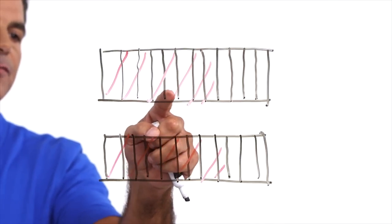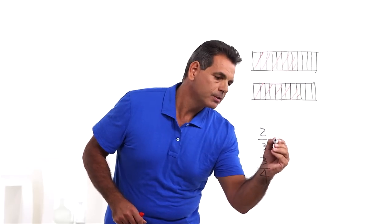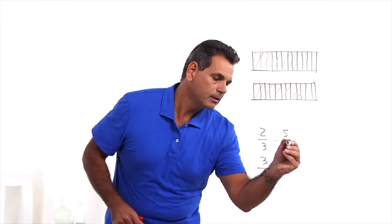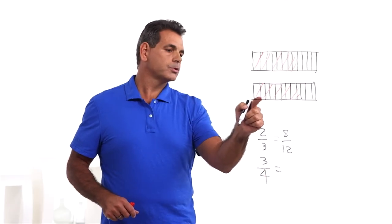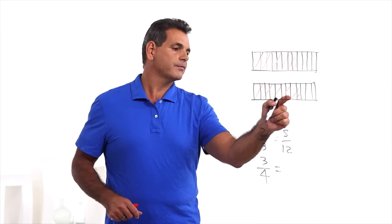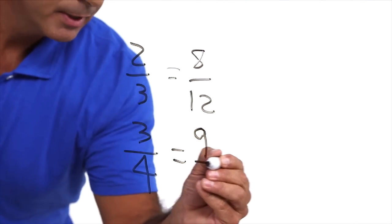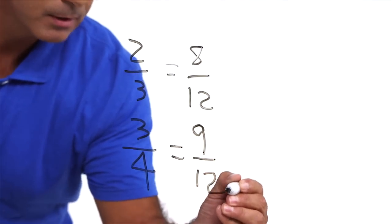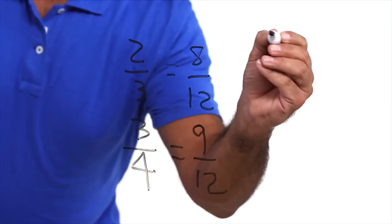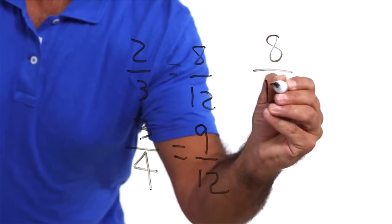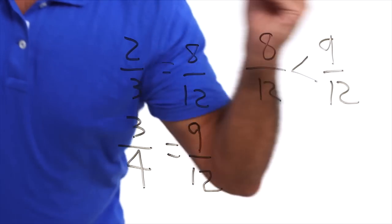Counting the twelfths in the first bar gives us eight — two-thirds equals eight-twelfths. Counting the twelfths in the second bar gives us nine — three-quarters equals nine-twelfths. Now the comparison is easy because they have common denominators: eight-twelfths is less than nine-twelfths.